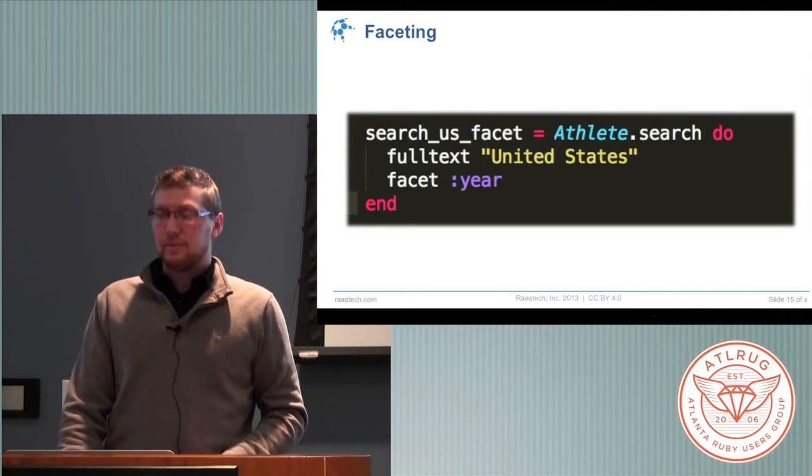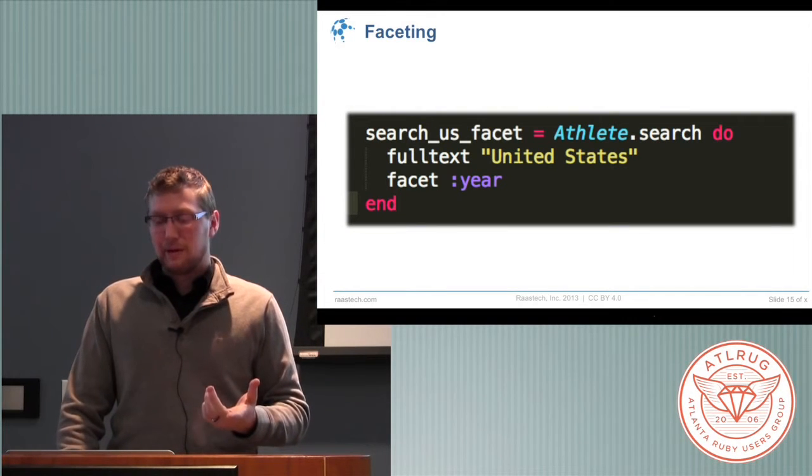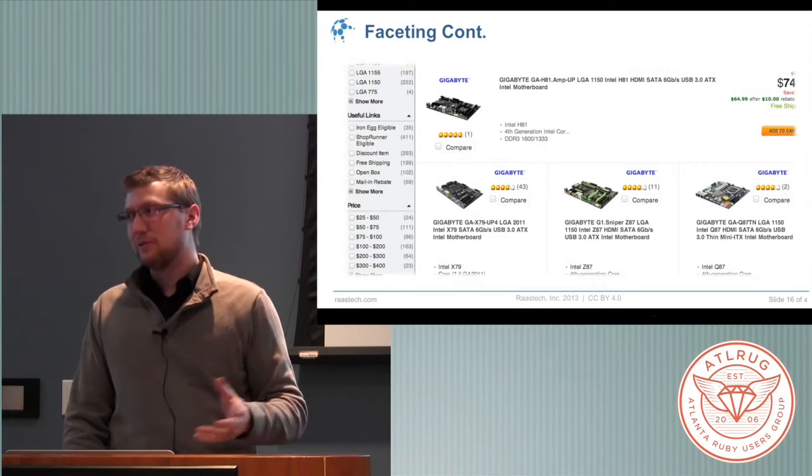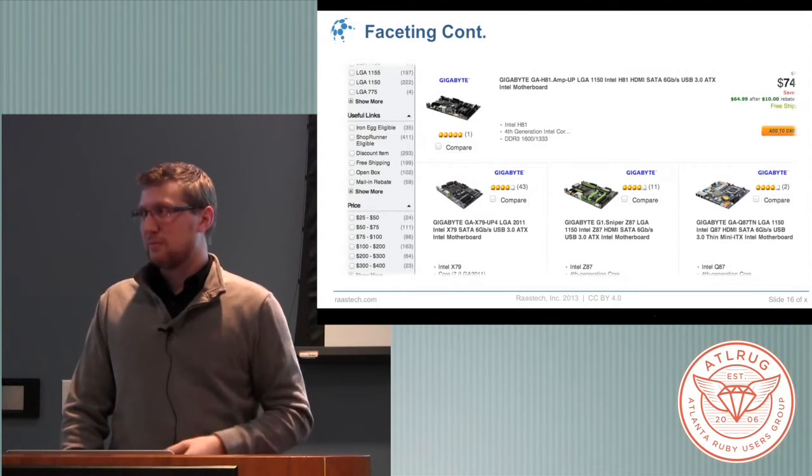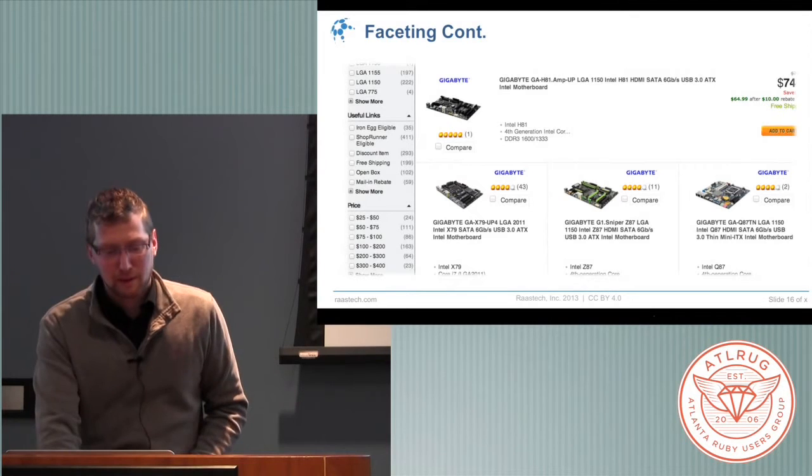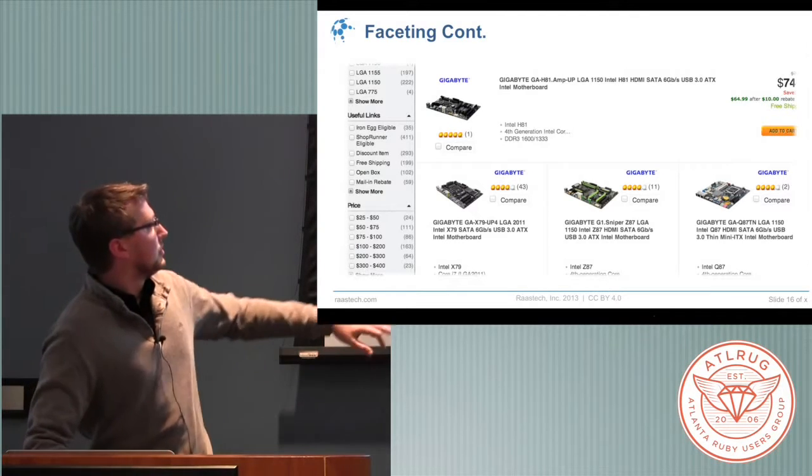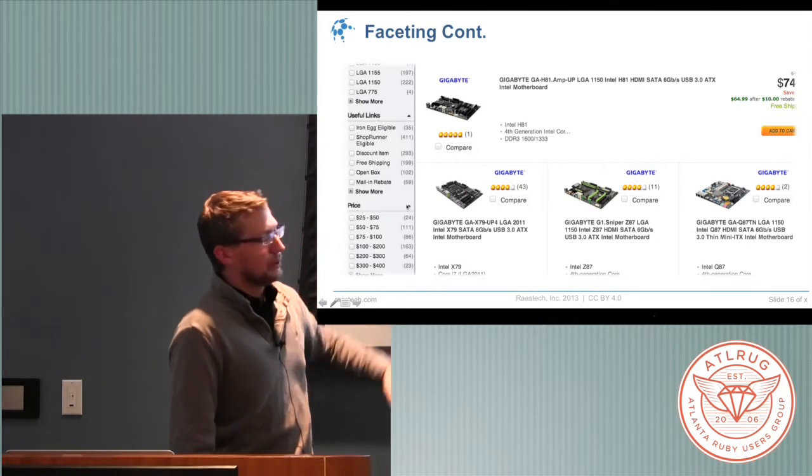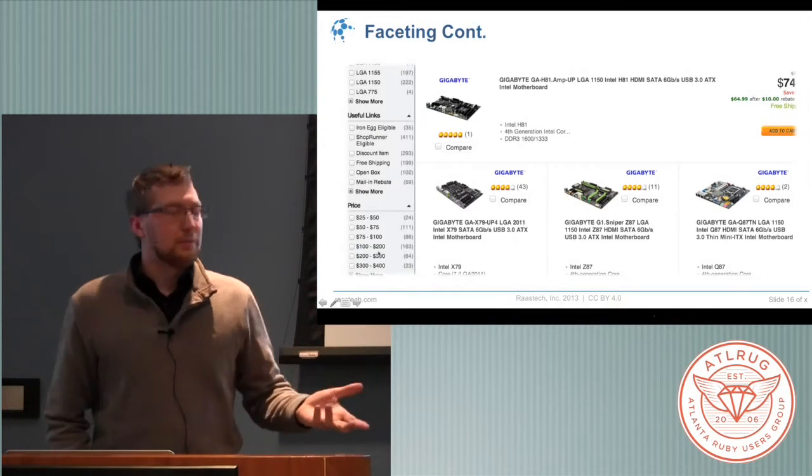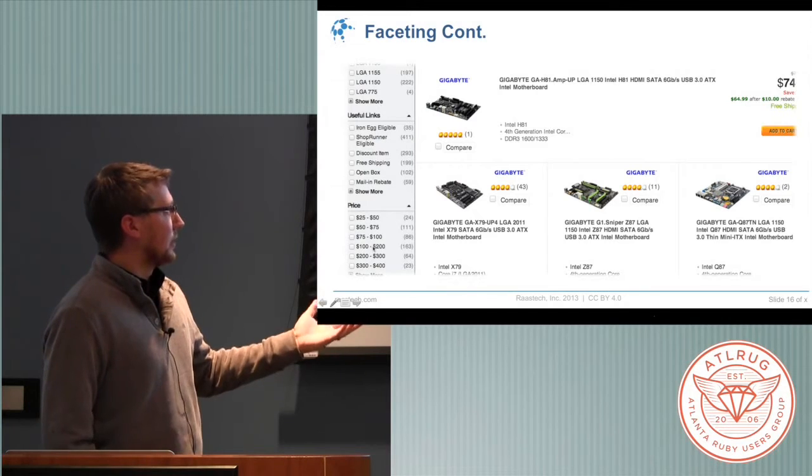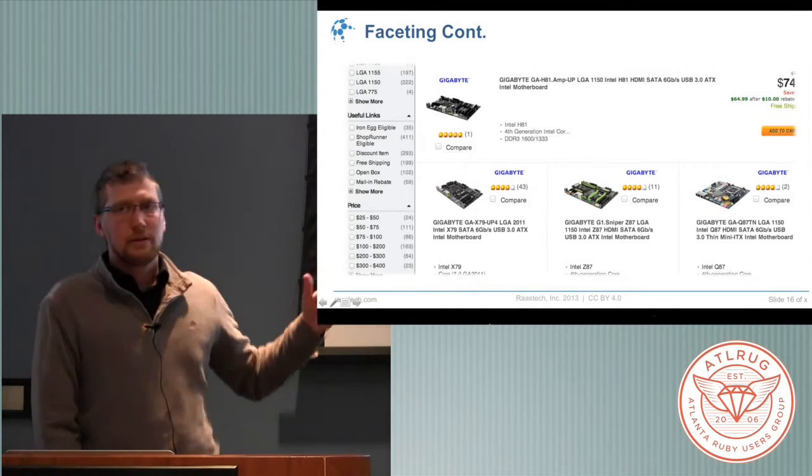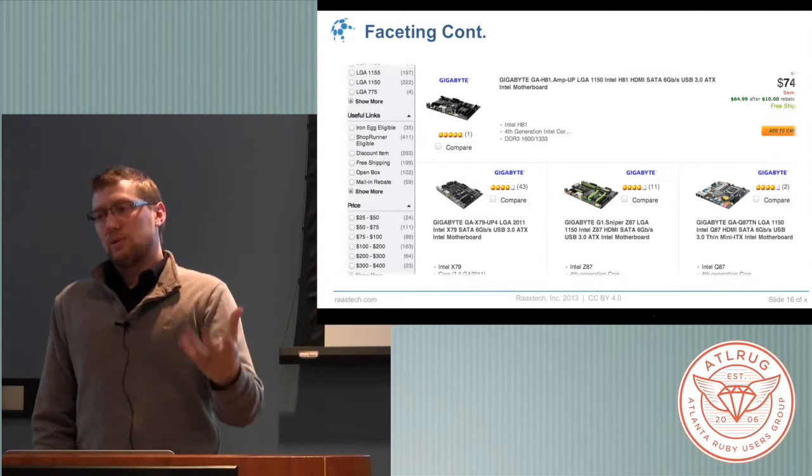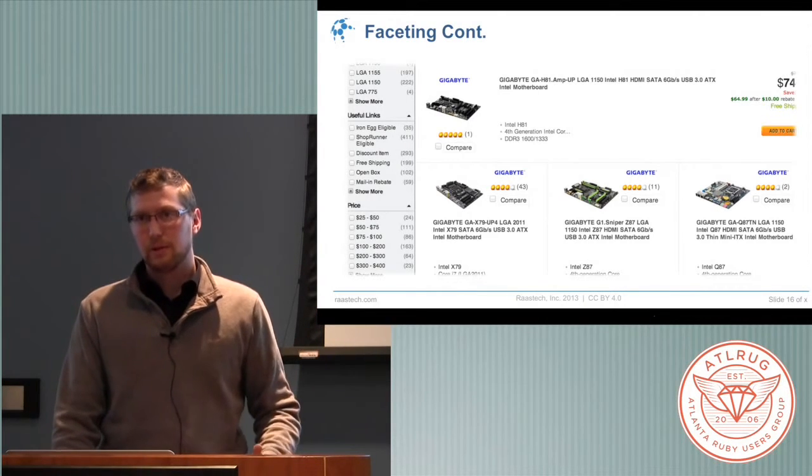A common example of this is actually in Newegg. If any of you have ever configured, built your own computer, or just bought random parts, this is one of the places you can obviously buy them. But the example is right here, where it has 163 things between $100 and $200. That's an example of how you can get your faceting. And from there, you can select that specific range, and then build another query, which will allow you to further limit your results.